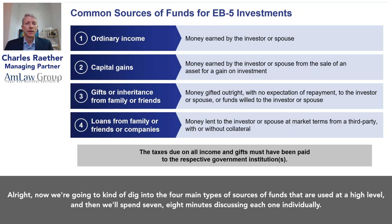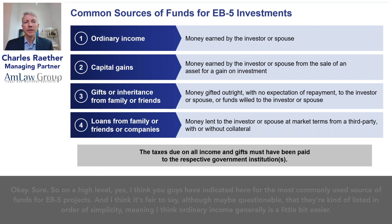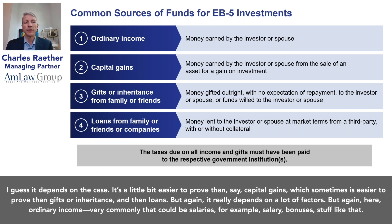Now we'll dig into the four main types of sources of funds. The most commonly used sources for EB5 projects, roughly in order of simplicity, are: ordinary income, capital gains, gifts or inheritances, and loans. Ordinary income — such as salaries and bonuses — is generally a little bit easier to prove than capital gains, which is sometimes easier than gifts or inheritance, and then loans. It really depends on a lot of factors.